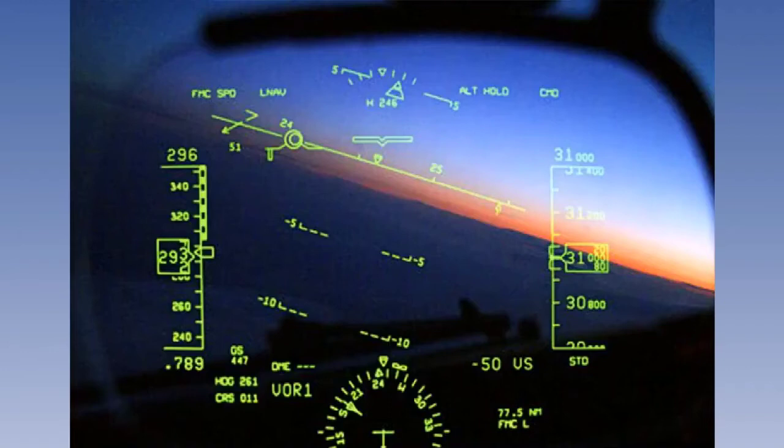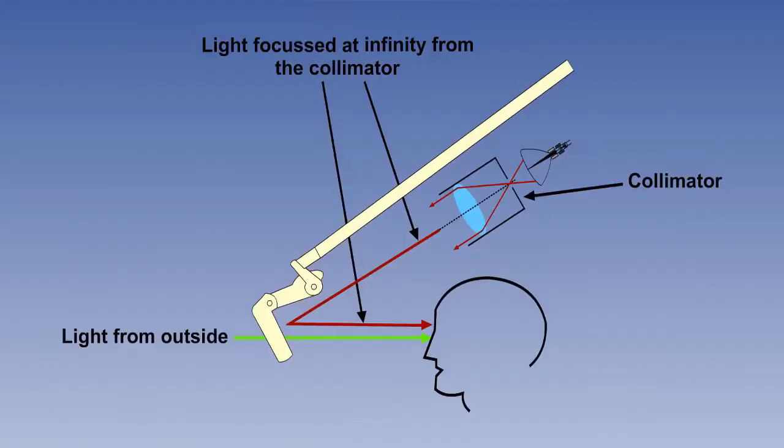It is important that the symbology presented to the pilot must appear to be focused a long distance away. Otherwise, the eyes would have to change focal length when switching between the outside world and the data on the head-up display, which would defeat the whole object of having the HUD. The light projected by the overhead unit is actually focused at infinity.